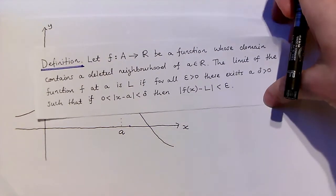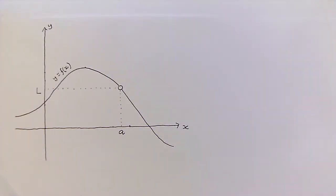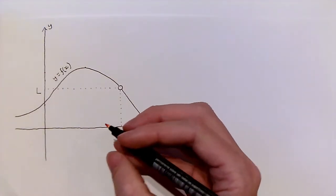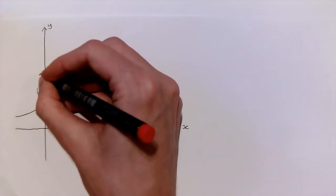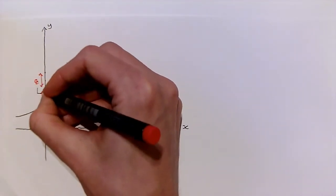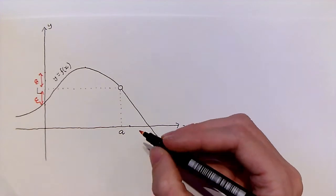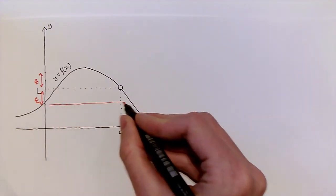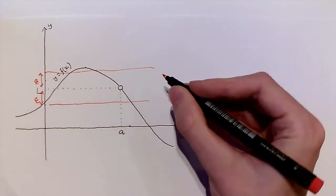So let's look at the interval of real values that lie within a distance epsilon of the number l. So on this picture, that's just these values on this axis here.